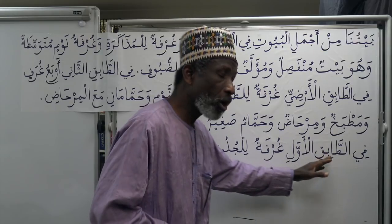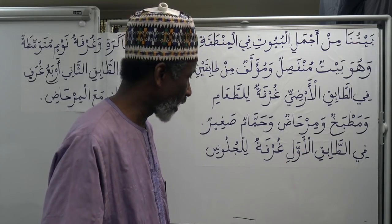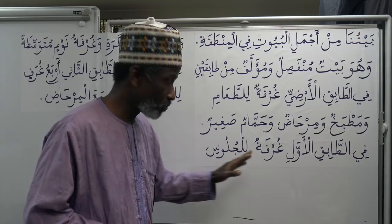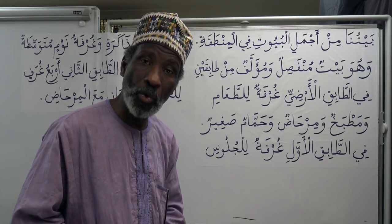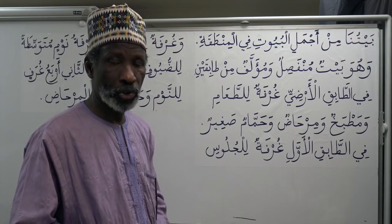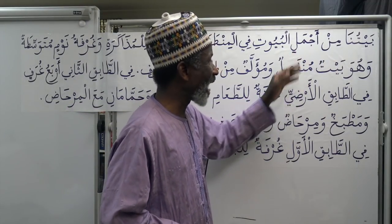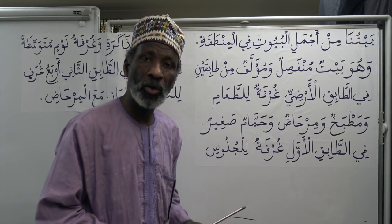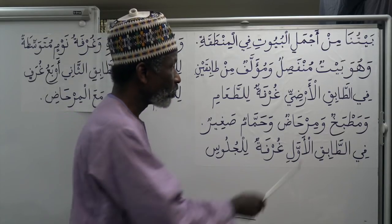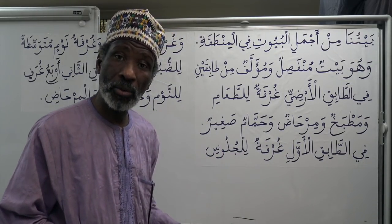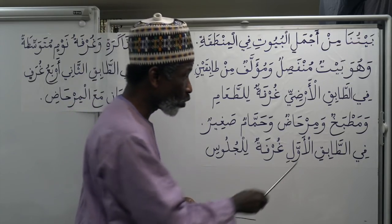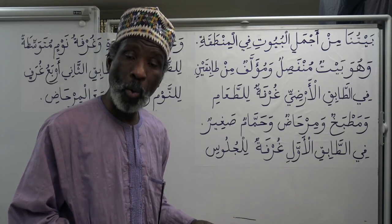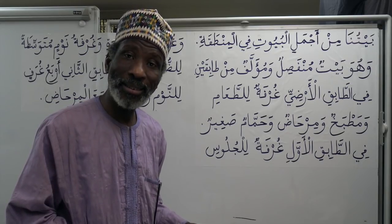Fi al-tabaq al-awwal — on the first floor — ghurfa lil-juluus. Ghurfa means a room; lil-juluus means for sitting, so that means a sitting room. Beytuna min ajmalil buyooti fil mintaqa, wa huwa beytun munfasilun, wa mu'alafun min tabaqayn. Fi al-tabaq al-ardhi: ghurfa lit-ta'aam, wa matbakh, wa mirhaad, wa hammam sagheer. Wa fi al-tabaq al-awwal: ghurfa lil-juluus.